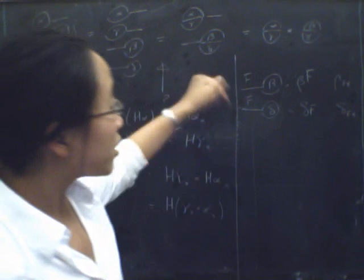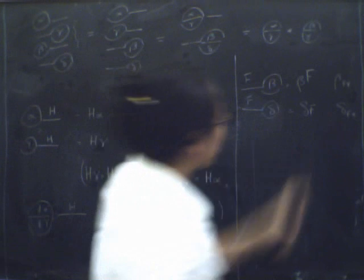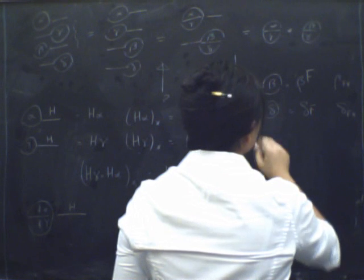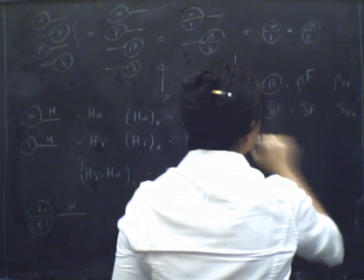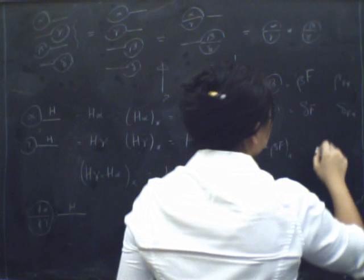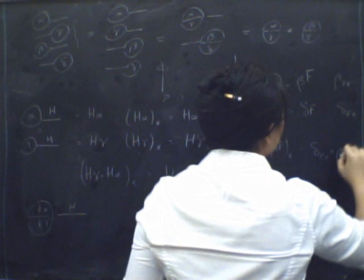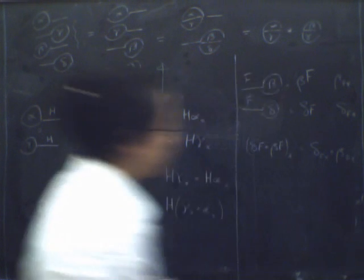Now when we vertically compose these two things, we just compose those. So the components of delta F composed with beta F vertically at X, that's just delta F of X composed with beta of F of X.